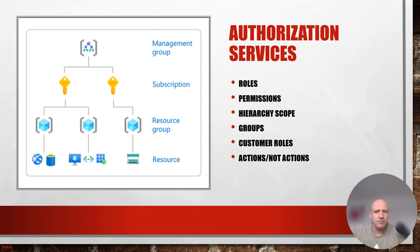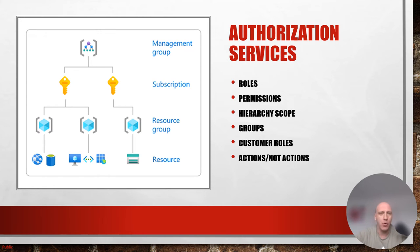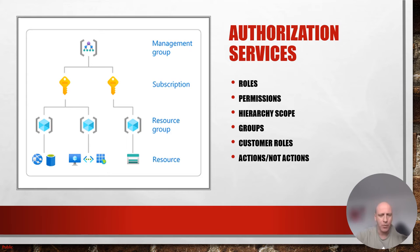Another pillar of IAM is authorization services — all concerned with roles, permissions, hierarchy, scope, groups, custom roles, and actions. It's based on a hierarchical structure, and authorization services define what a user can do to a specific resource or specific data. As shown from the Azure cloud example, you can assign specific roles based on specific scope. Wherever you scope a role, it has a hierarchical pass-down effect — if you apply a role at the management group level, that person will have access to resources in each subscription under the management group, each resource group, and each resource.